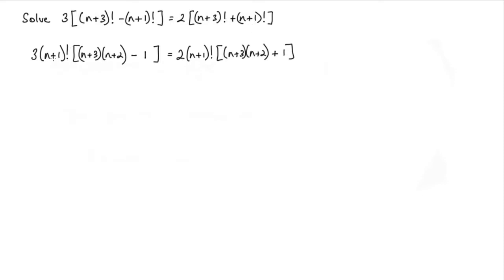Now because I've factored out this n+1 factorial on both sides, I can cancel these. And I can expand these brackets. So I've got 3 times n+3 times n+2, and subtract 3.